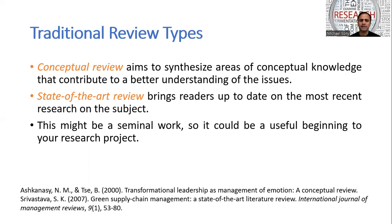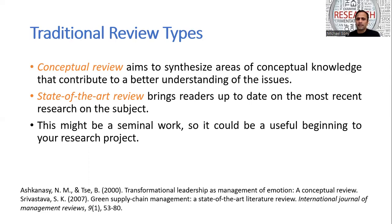The last type of traditional literature review is the state-of-the-art review. It brings the reader to the most recent research on an area. For instance, if you are researching Industry 5.0 and conducting a state-of-the-art review, it explains and brings forth the various aspects of Industry 5.0, guiding readers as regards the currency of the knowledge in that particular domain.